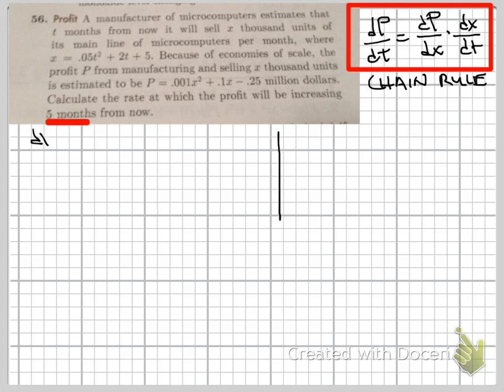So let's go ahead and do that. Let's look at the two separate derivatives. dp/dx, it's just going to be the power rule: we get 0.002x + 0.1. And dx/dt, we're going to get 0.1t + 2. So that's part of the problem.